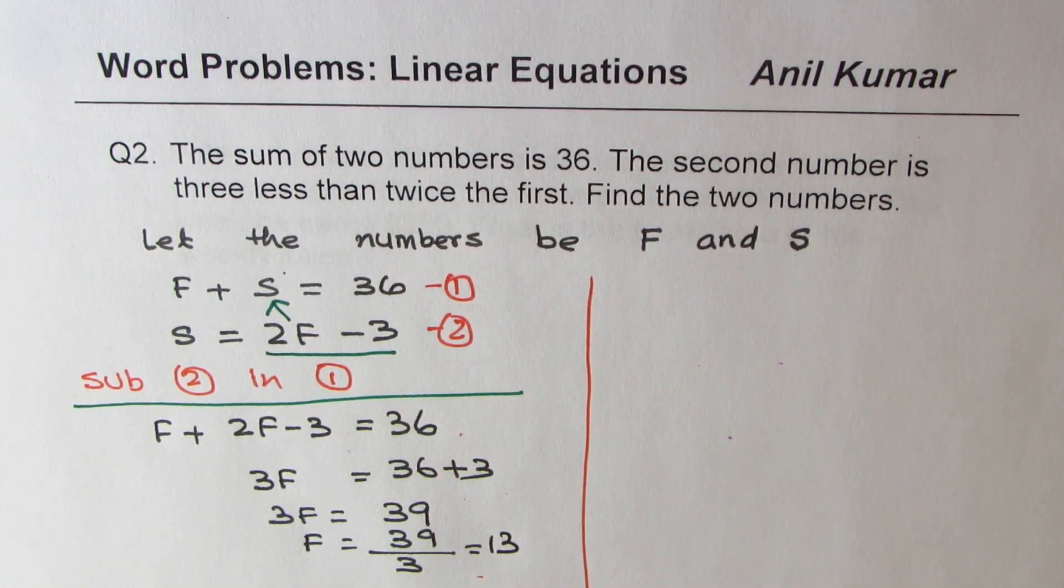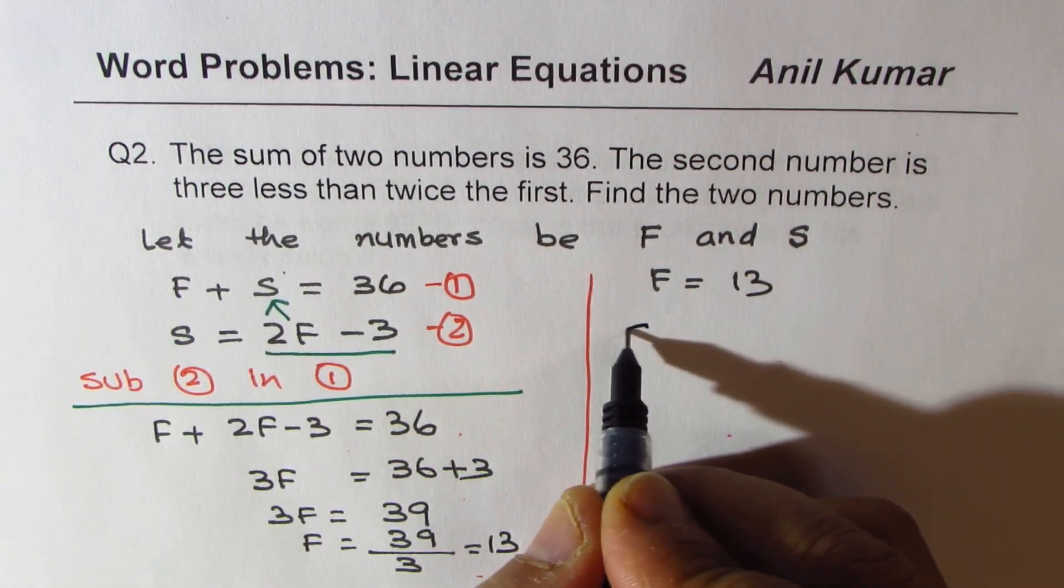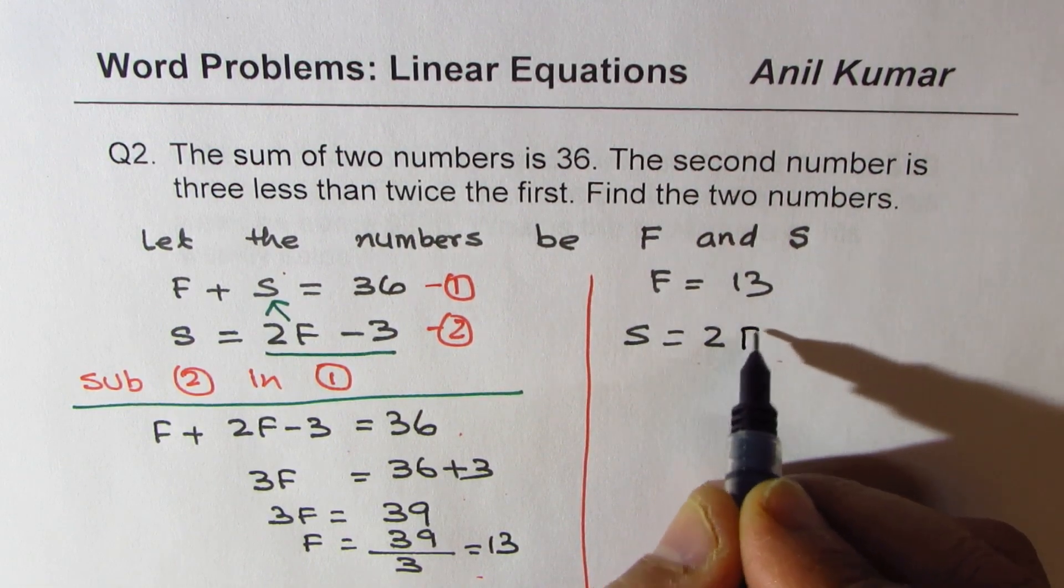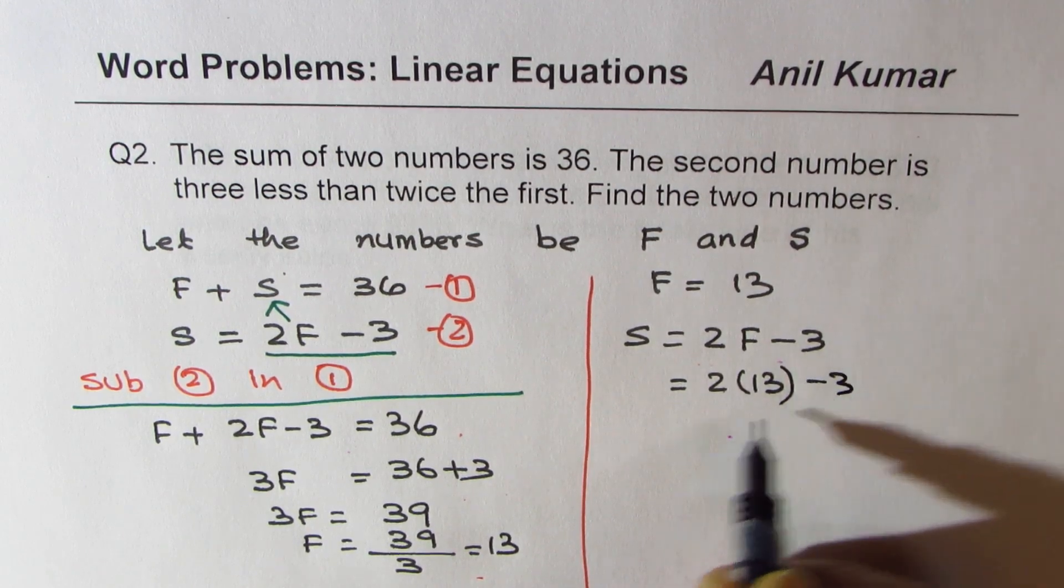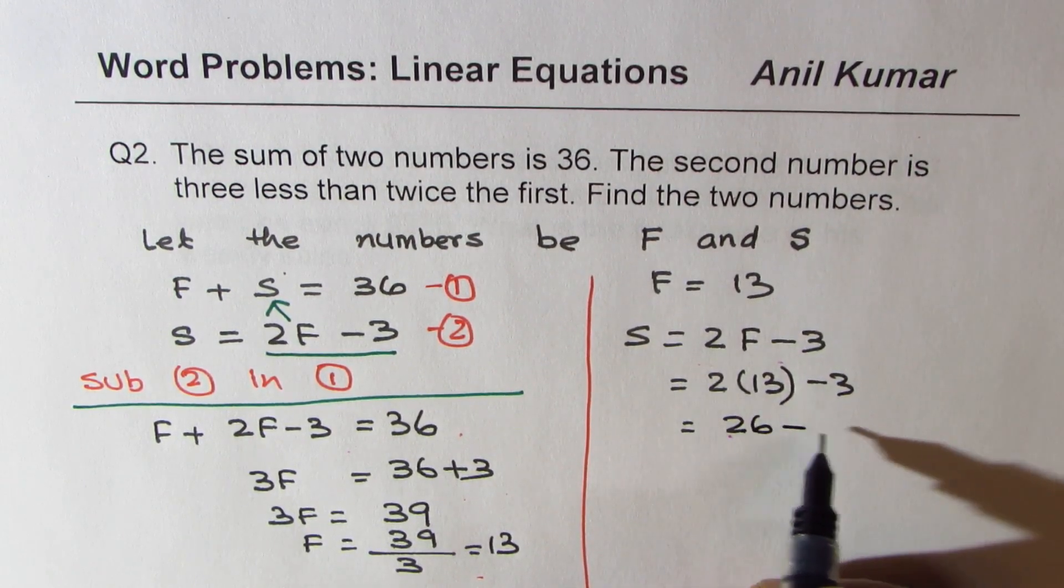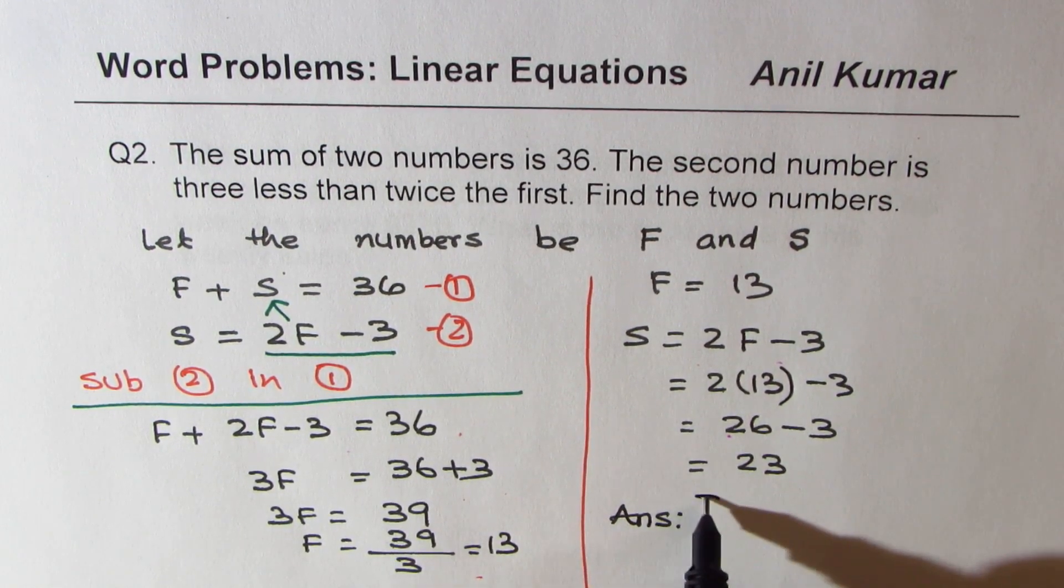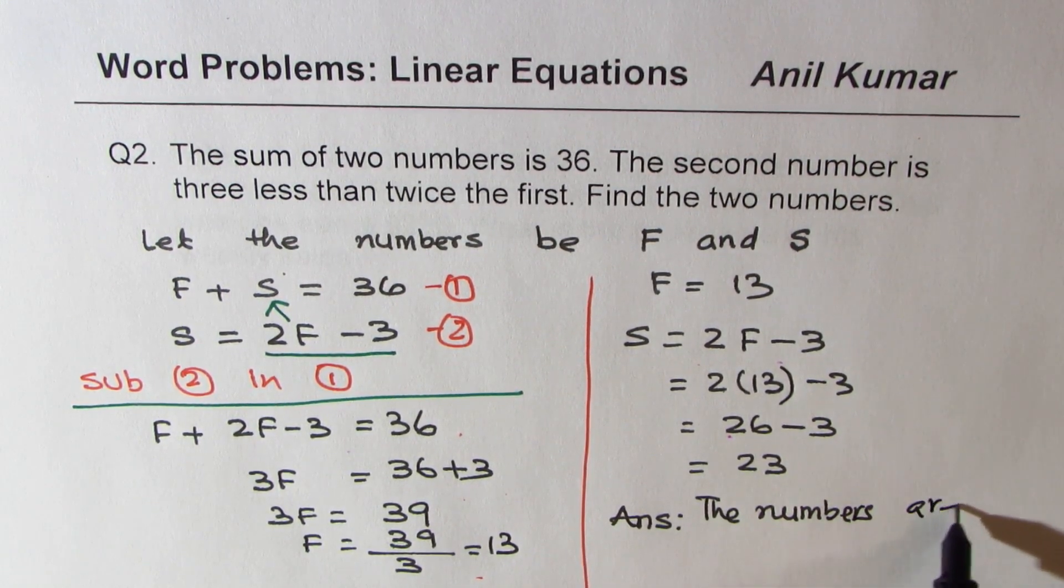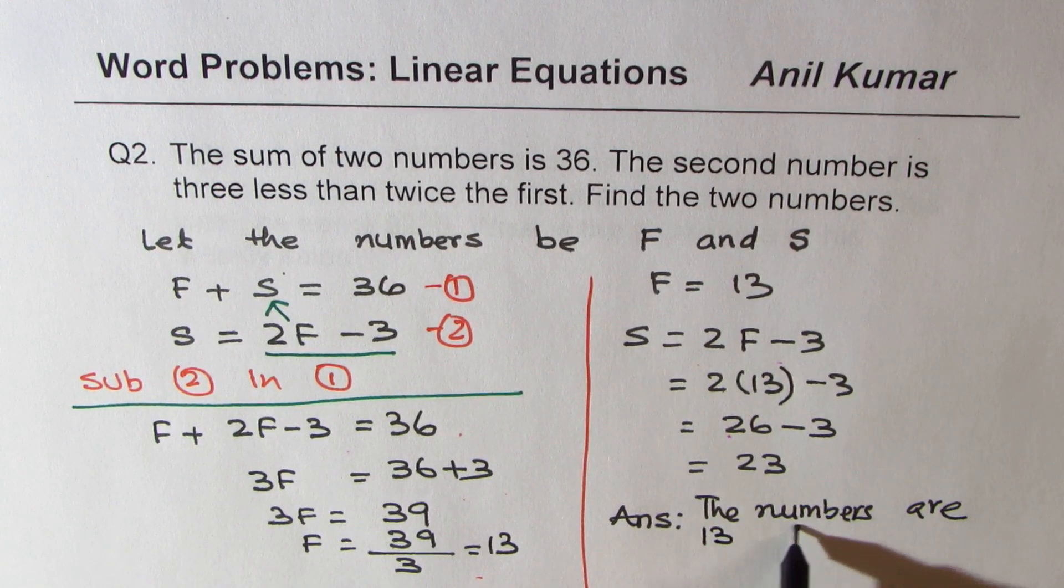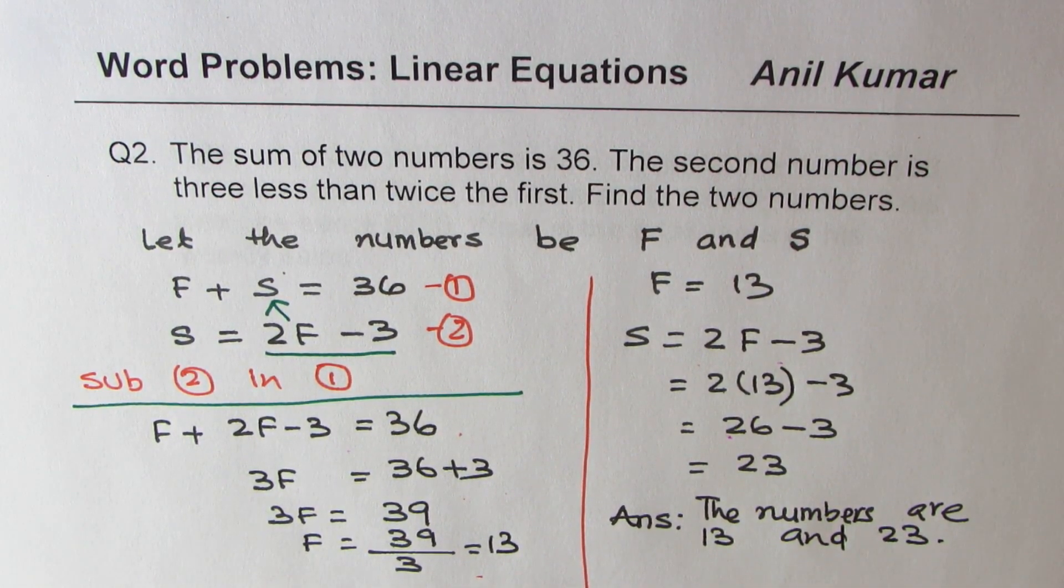Once you get that, you have the second number also. So we know the first number is 13 and second number is 2 times first minus 3. So it is 2 times 13 minus 3, which is 26 minus 3, which is 23. So the answer is the numbers are 13 and 23. So that is how this should be solved.